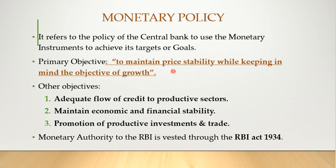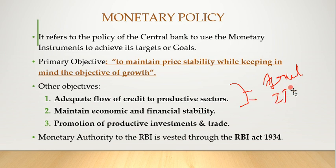Now the secondary objectives of monetary policy: adequate flow of credit to productive sectors like agriculture, and the IT sector which is very important for the Indian economy as we export IT services. These are important sectors that must get the money required. Credit means cash or money flowing to those sectors.